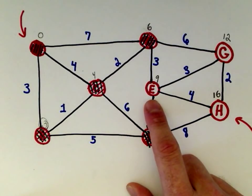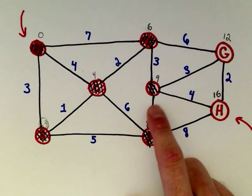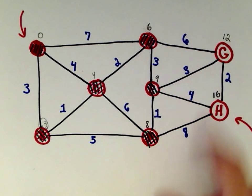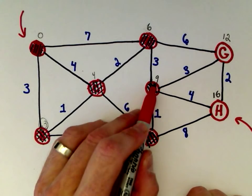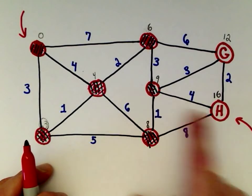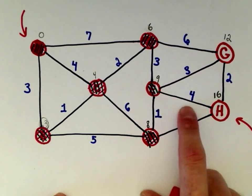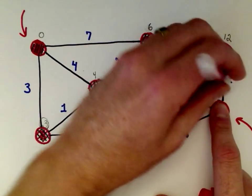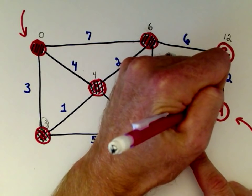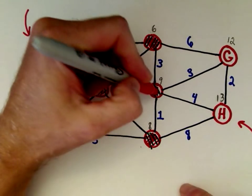We've only got two vertices left: E and G. Let's look at vertex E. From E to vertex G: nine plus three is twelve, which ties the existing value. From vertex E to vertex H: we knew there was a path length of nine to vertex E, and this path has a length of four, so nine plus four gives us a path length of thirteen — a new shorter route. So we update H from sixteen to thirteen. We've now taken care of vertex E.